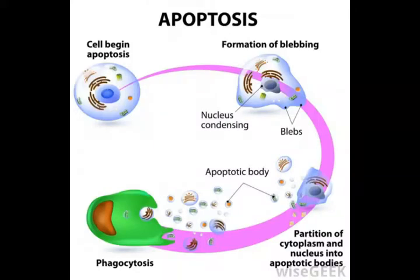Caspases are a family of inactive proenzymes that play a crucial role in cell apoptosis, which is the scheduled death of cells. The role of caspase 3 in apoptosis is to cleave and activate caspases 6, 7, and 9 in order to break down the apoptotic cells before removal.